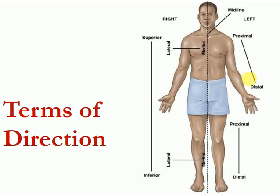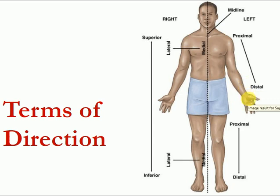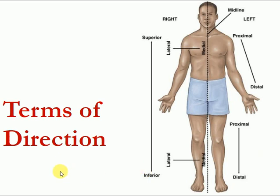We also have proximal and distal terms. Proximal means near to the attachment of the limb to the body; distal means far from the attachment. For example, the upper limb is connected to the body at the shoulder — structures near the shoulder are proximal, and structures far from the shoulder are distal. The lower limb is connected at the pelvis — structures near the pelvis are proximal, and those far from the pelvis are distal.